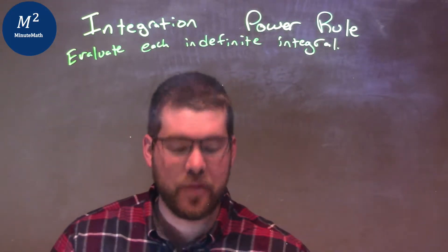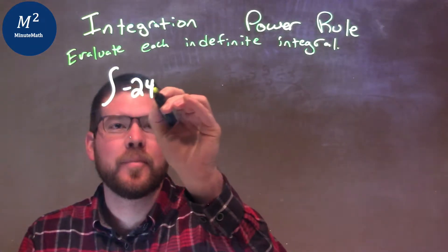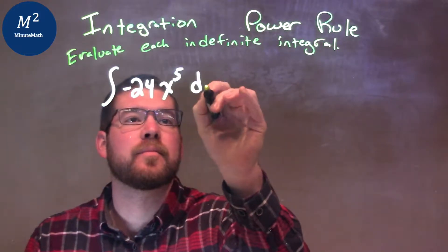So, if I was given this integral, the integral of negative 24 x to the 5th dx. Okay?